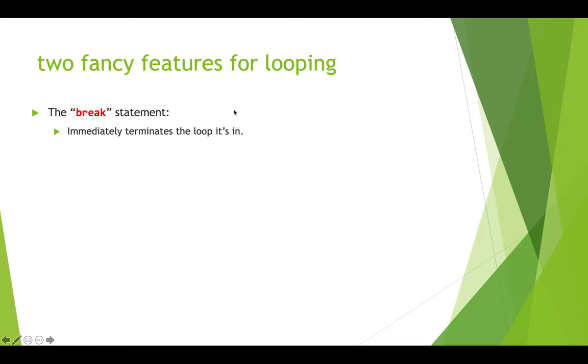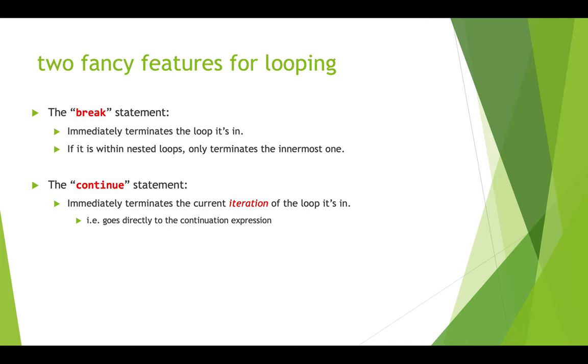I want to introduce you to two other small features that you can use when you're doing looping that can occasionally be useful, especially when you've got complicated things like the flowcharts we've just seen. The first is the break statement. A break statement has the effect of immediately terminating the loop it's in. If you've got nested loops, the break statement only terminates the innermost one that it's in. And the continue statement terminates the current iteration of the loop it's in. So what that means is instead of finishing the rest of the code block, it skips it and then it goes back up to the top and we do the test condition again.